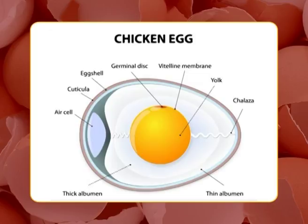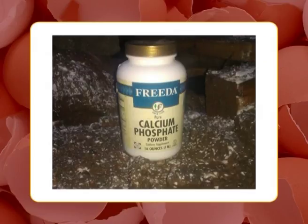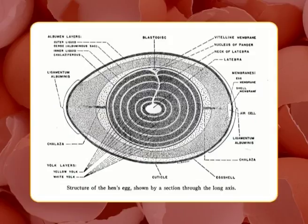The egg is surrounded by a 0.2 to 0.4 mm thick calcareous porous shell, which contributes about 18 percent of the weight of a whole egg. It is composed of 94 percent calcium carbonate, 1 percent calcium phosphate, 1 percent magnesium carbonate, and 4 percent organic matrix, mainly protein. A cross-section through the shell clearly shows the existence of four layers.